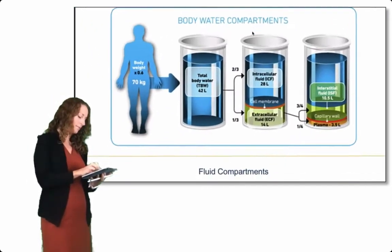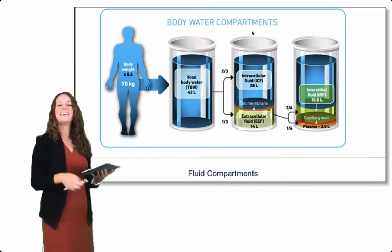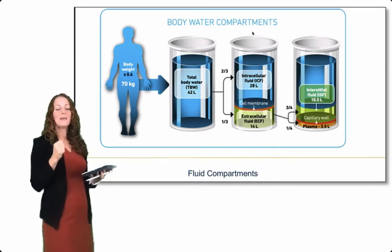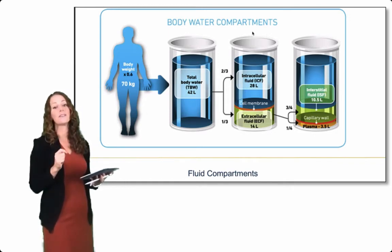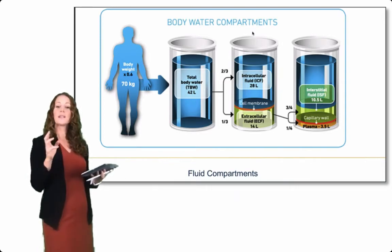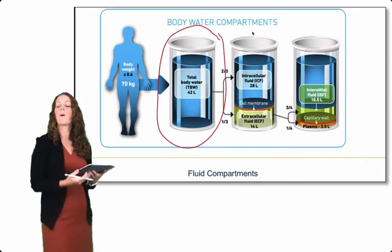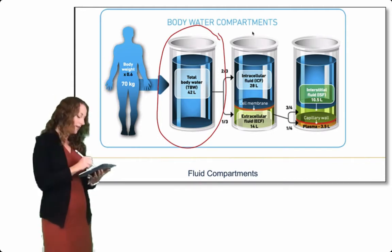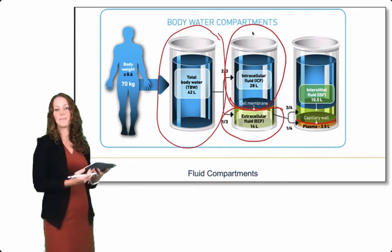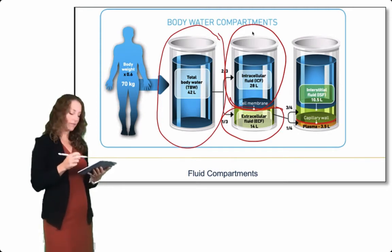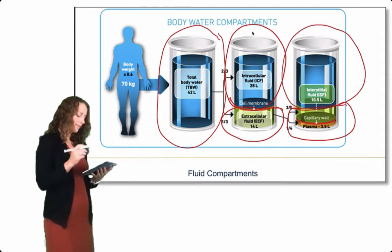Let's look at this diagram a little more closely. Typically we use what we call the average 70 kilogram male. Of course we know that this is not representing a large part of the population, but it makes for a simple calculation and it's a starting point. We will talk about how this varies across different populations and age groups as well. We divide total body water into the ICF and ECF, and from there we divide the extracellular fluid into plasma and interstitial fluid.